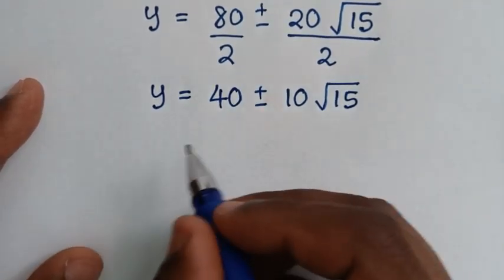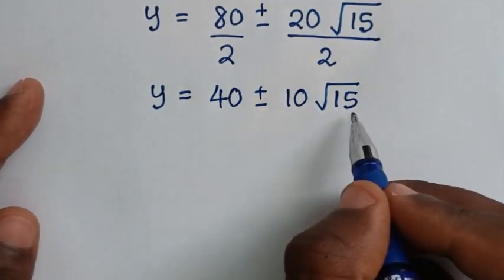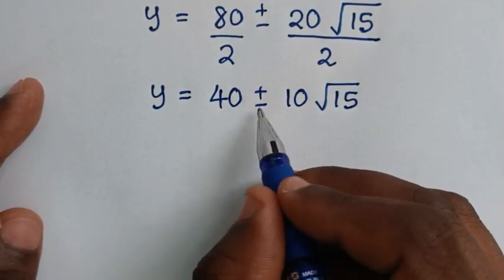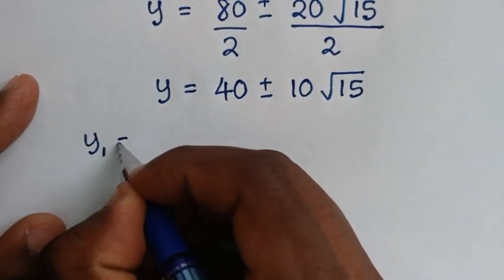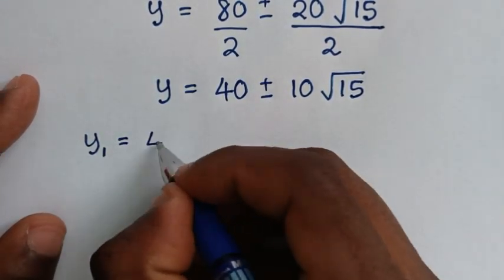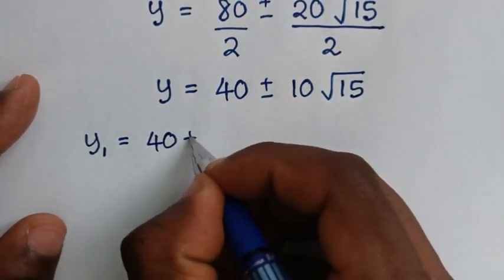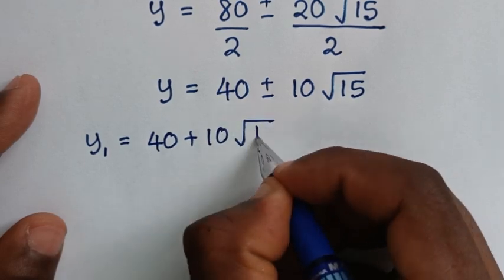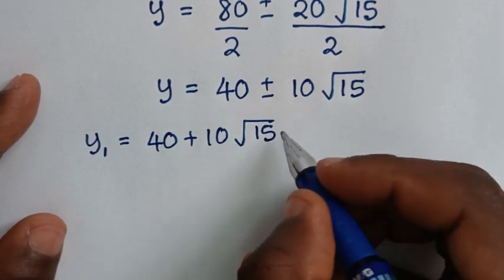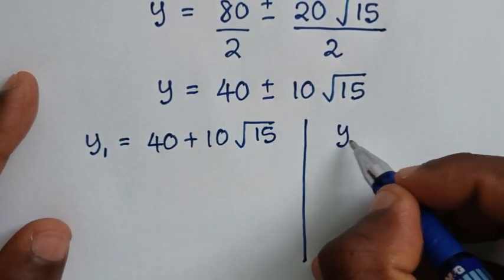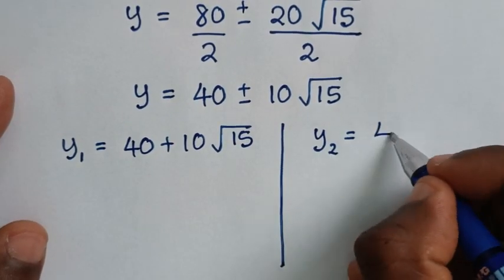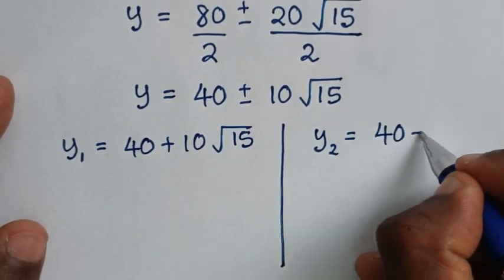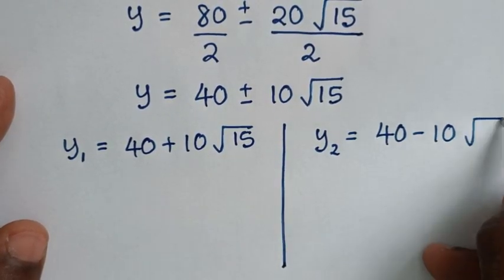We have two solutions for y because of the ± sign. The first value is y₁ = 40 + 10√15, and the second value is y₂ = 40 − 10√15.